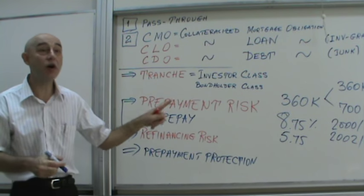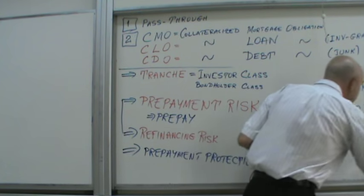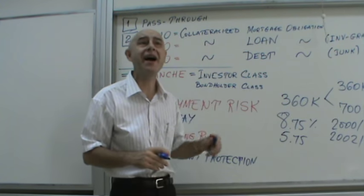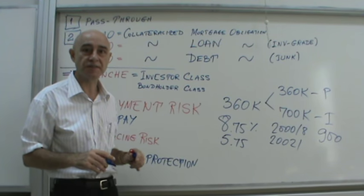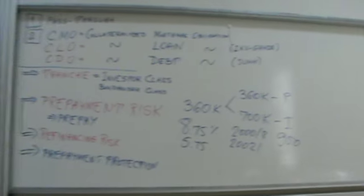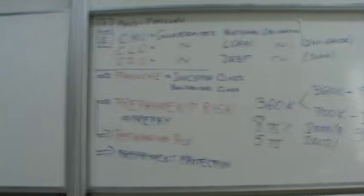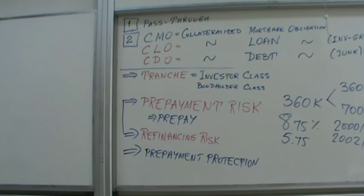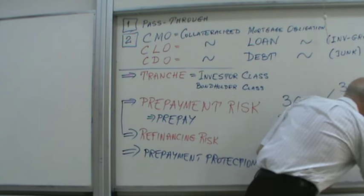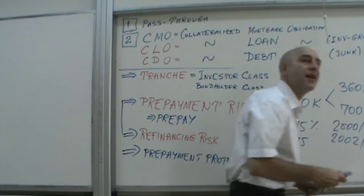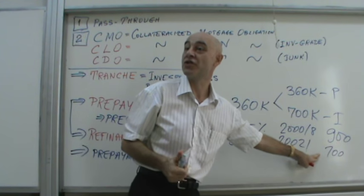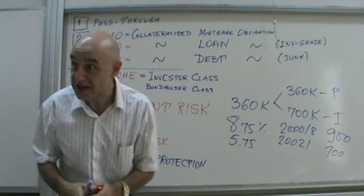Before refinancing at 8.75%, with taxes and fees I was paying about $900 a month. After refinancing, I was able to lower it to approximately $700 a month.